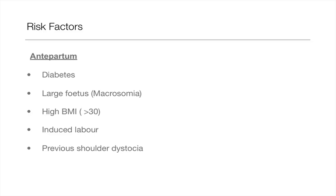Talking about the risk factors of shoulder dystocia: before the birth, diabetic mothers are at more risk of having babies which can have shoulder dystocia. This is because the large levels of glucose in the mother can lead to the baby producing more insulin and therefore becoming larger or macrosomic. When the baby is very large, it's often difficult to come out of a pelvic inlet and this is when the anterior shoulder can get stuck behind the pubic symphysis.